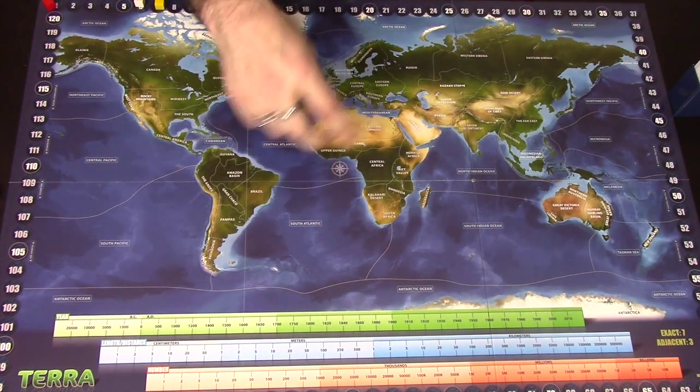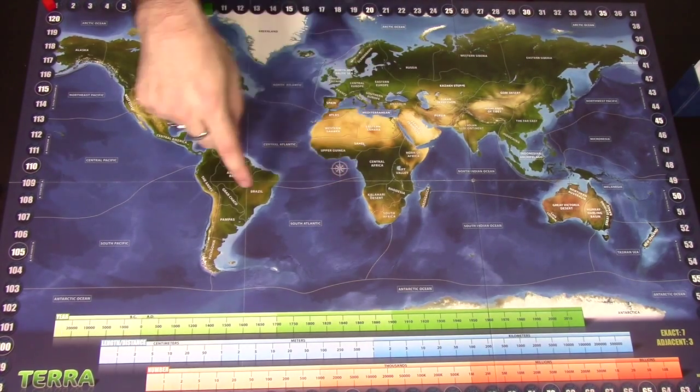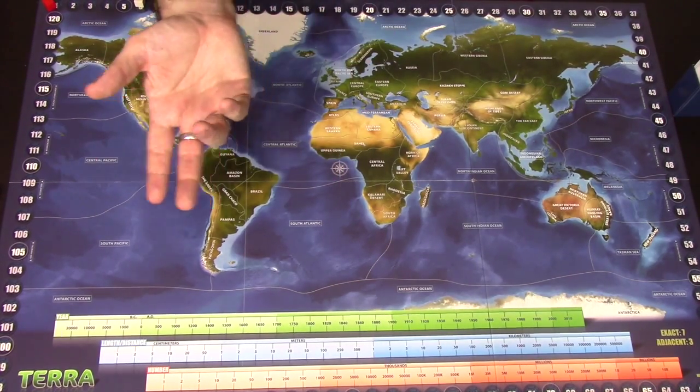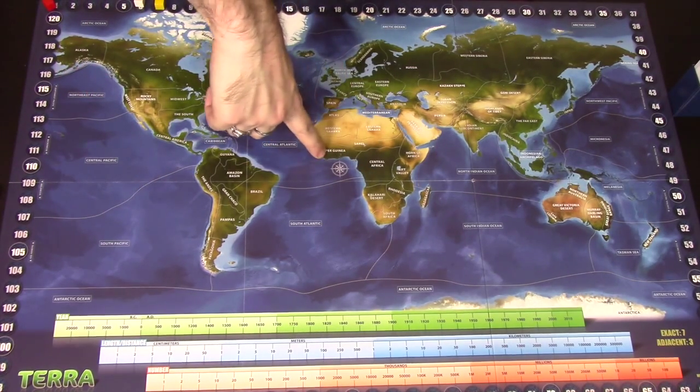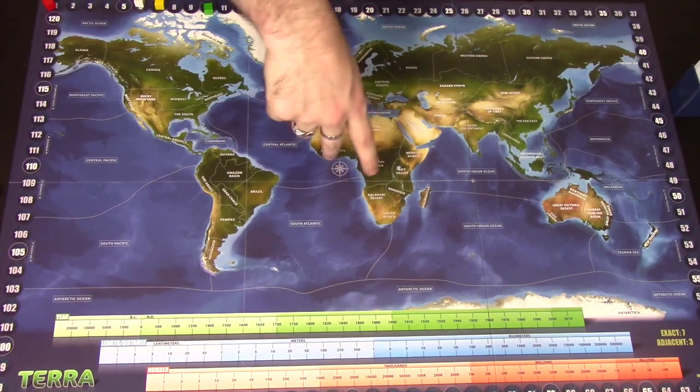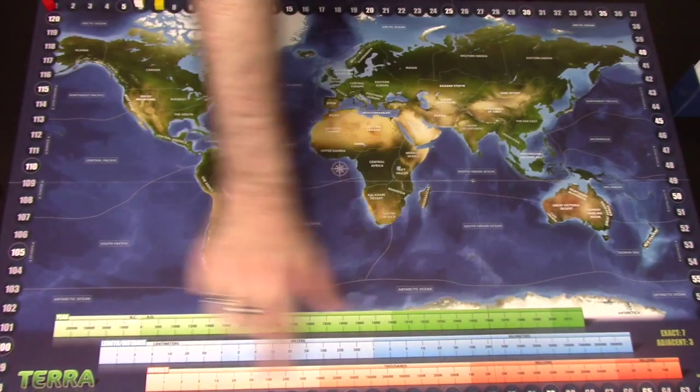Some of the categories have more than one area, so some things might be in two different areas, so they might be, for example, there might be certain species or something that might be found in, for example, Central Africa and Upper Guinea. So again, there are two correct locations you might get, but there's generally only one correct year or only one correct length or only one correct number, depending on what they're going to ask you.